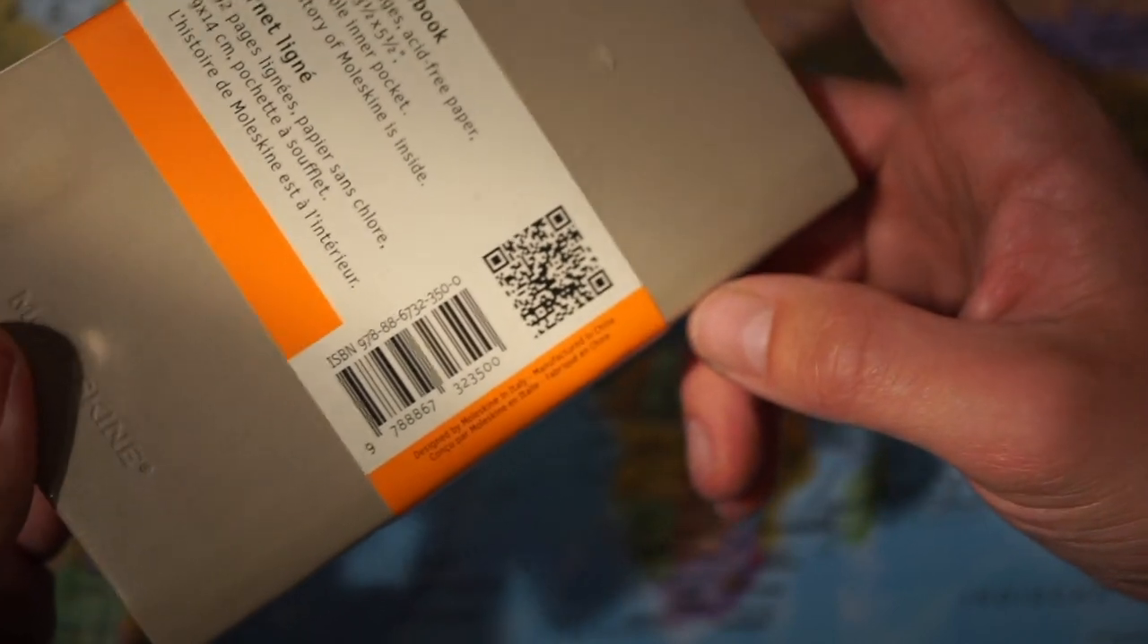Dimensions are 14 centimeters and 9 centimeters width. So the Moleskine products are designed in Italy and manufacturing is done in China.